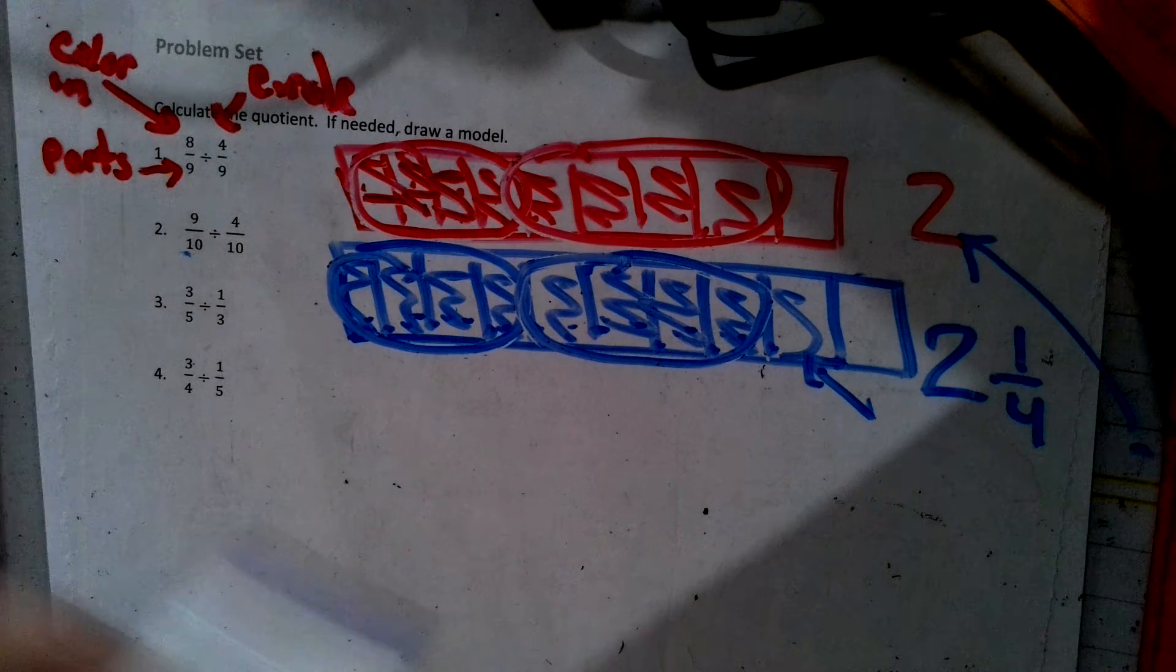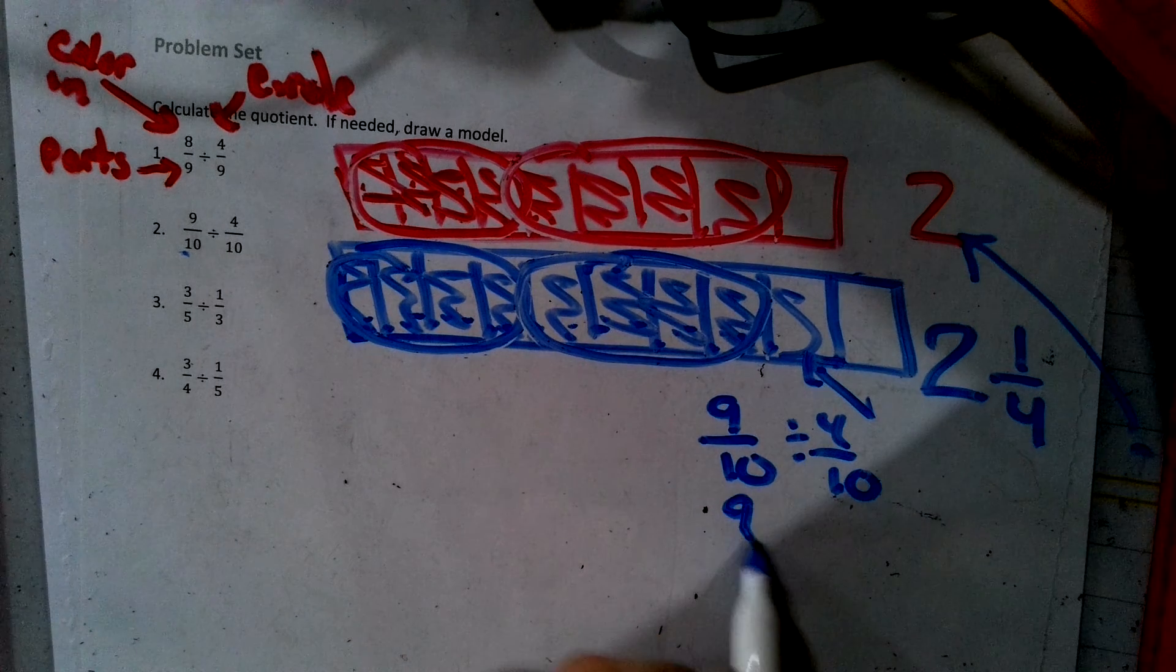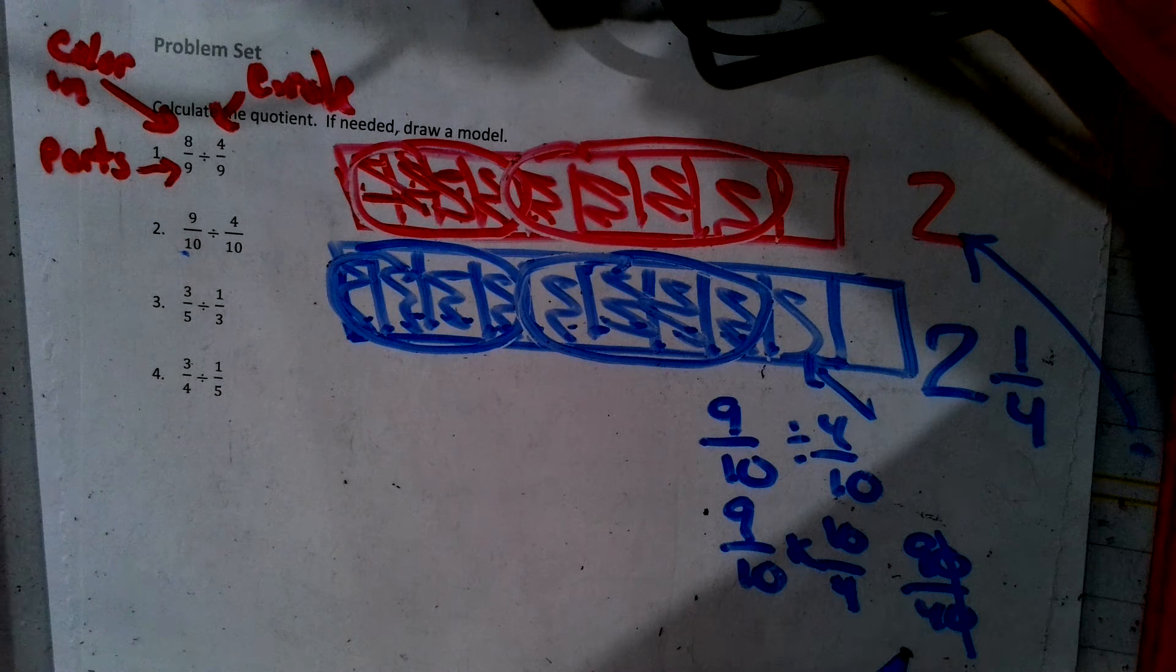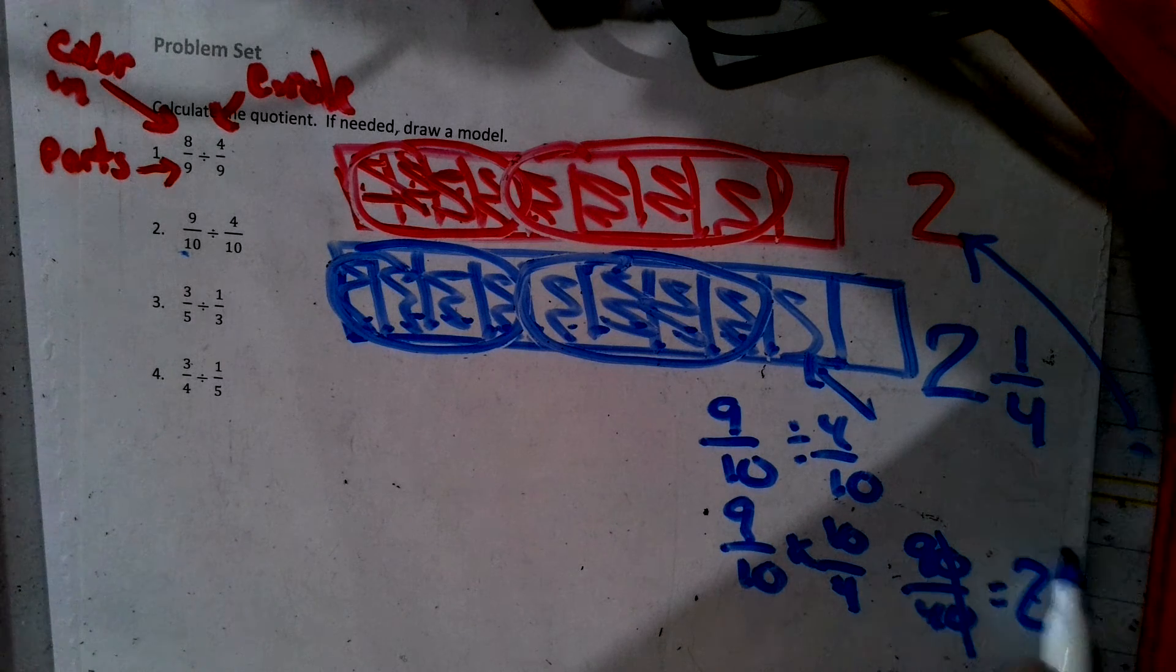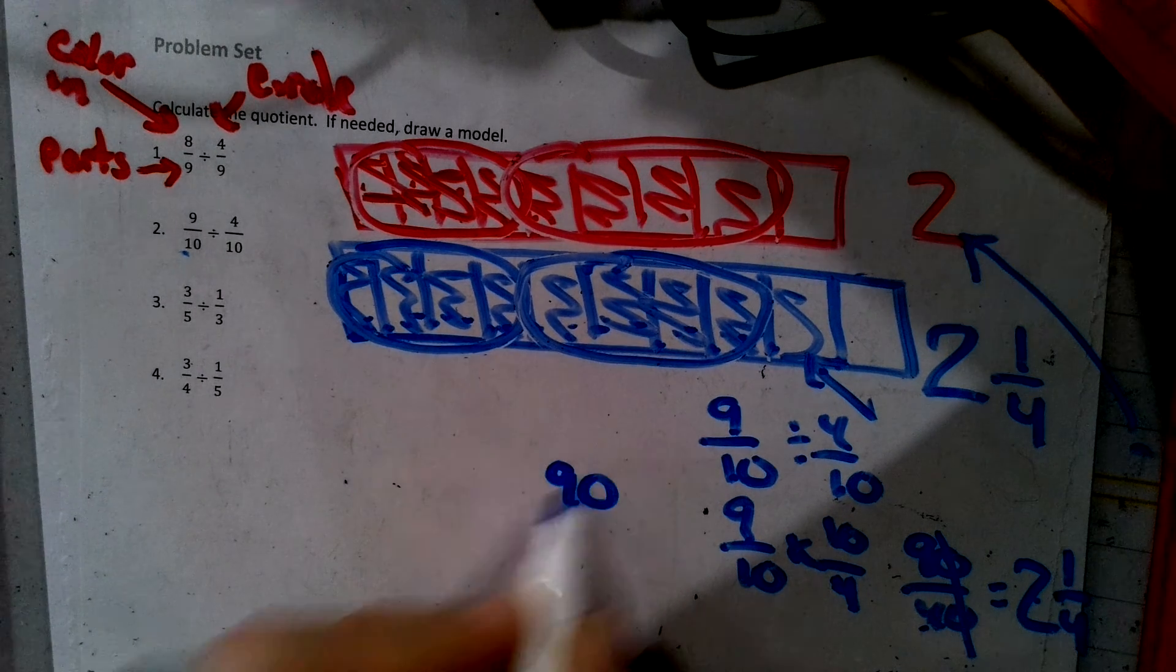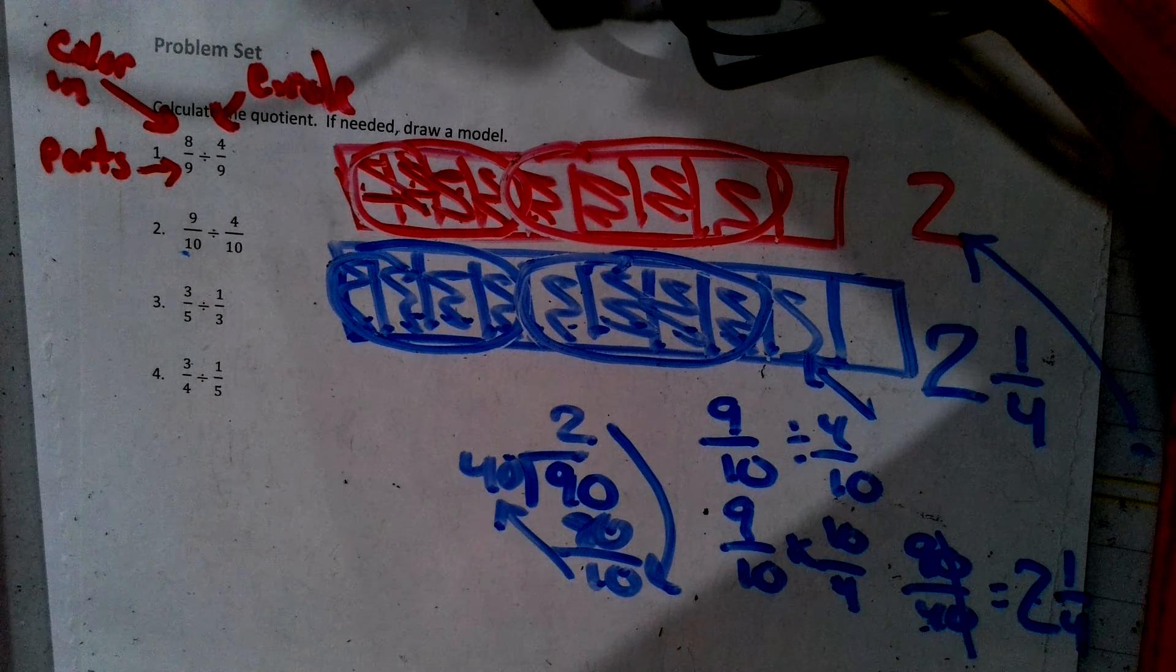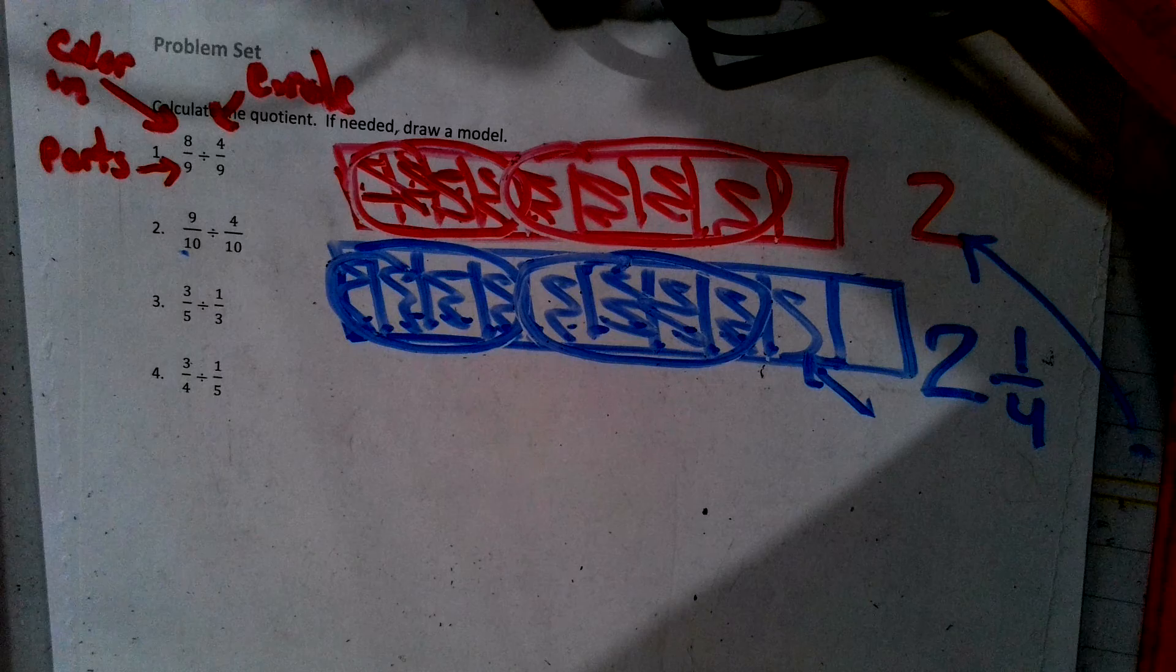So now in standard algorithm, we would do nine tenths divided by four tenths. Drop, change, flip. We get 90 over 40. We can cross out a row of zeros because that's dividing by 10. So nine. Four goes into nine twice to make eight. One left over out of a denominator of four. If you didn't know how to do that, you could take 90 divided by 40. You see that goes in twice to make 80. You got 10 left over, two and 10 fortieths. 10 fortieths is one fourth when you simplify.